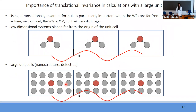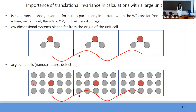Imposing translational invariance is particularly important when Wannier functions are far from the origin of the unit cell. One example is lower-dimensional systems, such as monolayers, where the molecule is placed far from the origin. One might try an ad hoc solution of translating the system close to the origin, but this does not always work — for example in systems with large unit cells containing nanostructures or defects, one cannot translate the system so that all Wannier functions lie near the origin. Using a translation-invariant formula is therefore necessary in these cases.